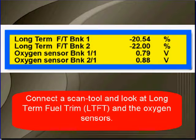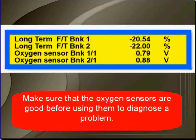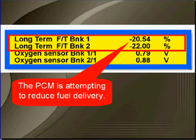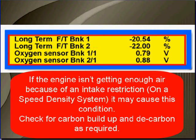Then connect your scan tool and select scan data, and look for long-term fuel trim, and compare it to the oxygen sensors. Make sure that the oxygen sensors are good before using them to diagnose any problem. In this example, the oxygen sensors are near full-rich indication. The PCM is attempting to reduce fuel delivery — we have a rich condition.